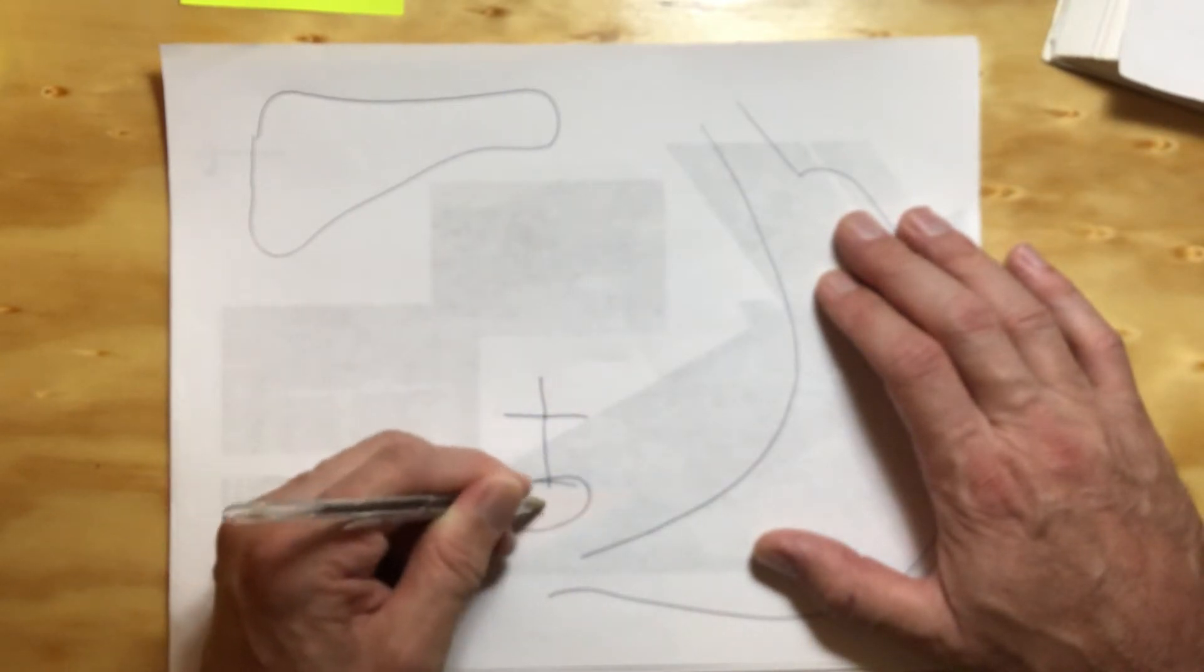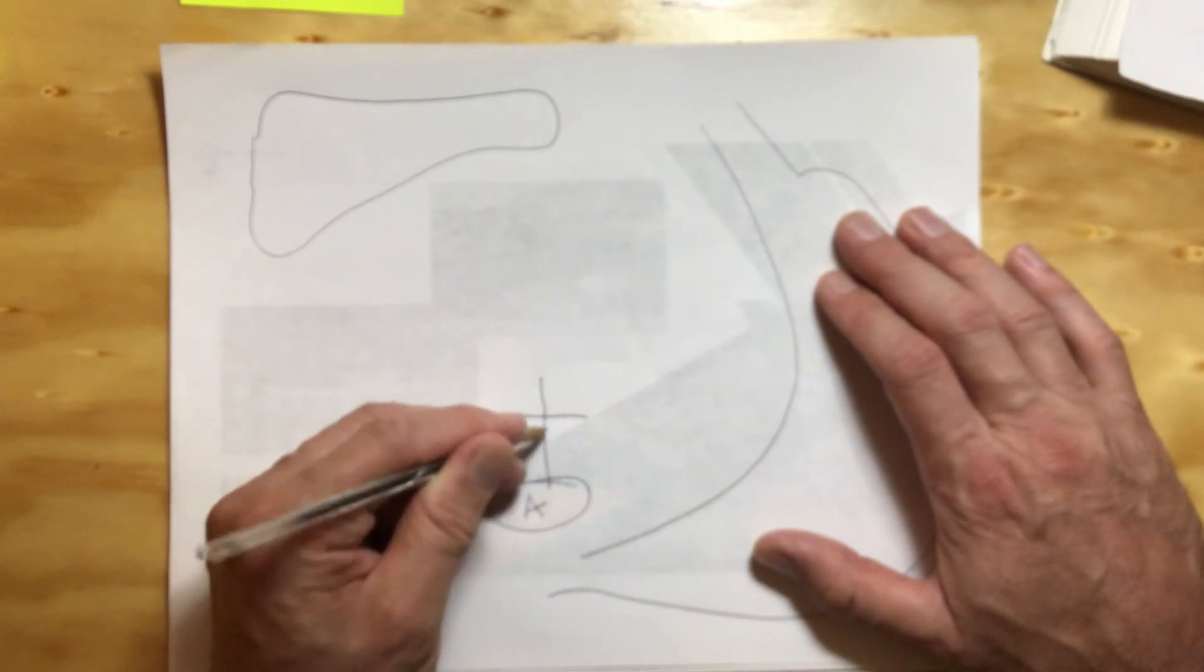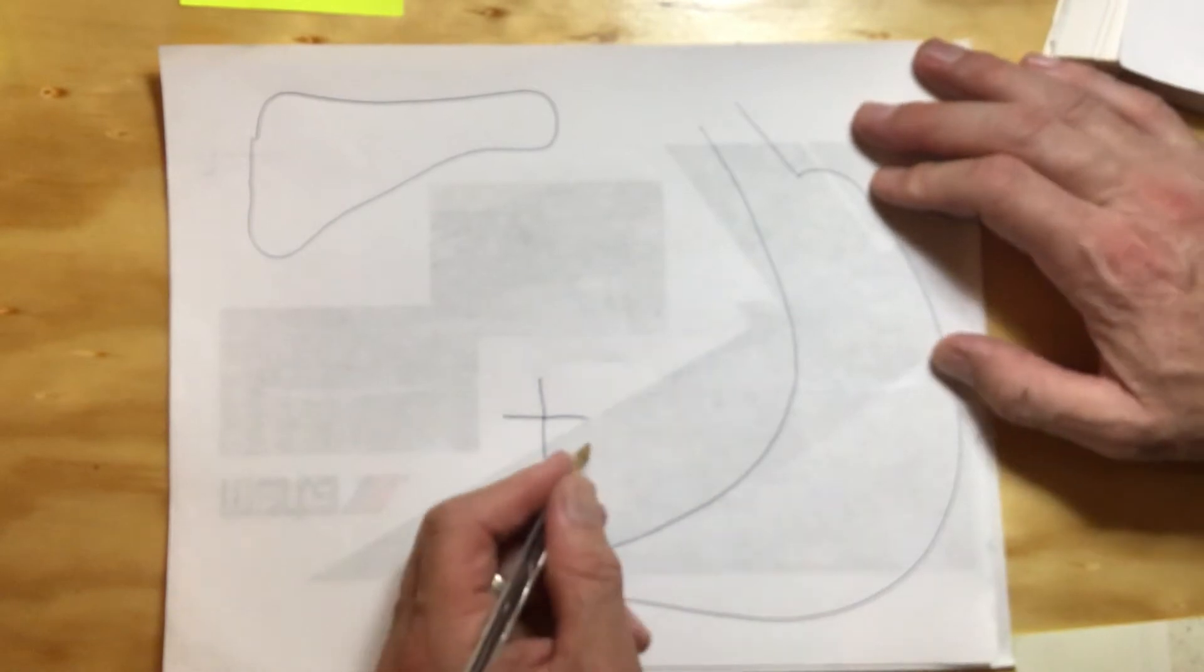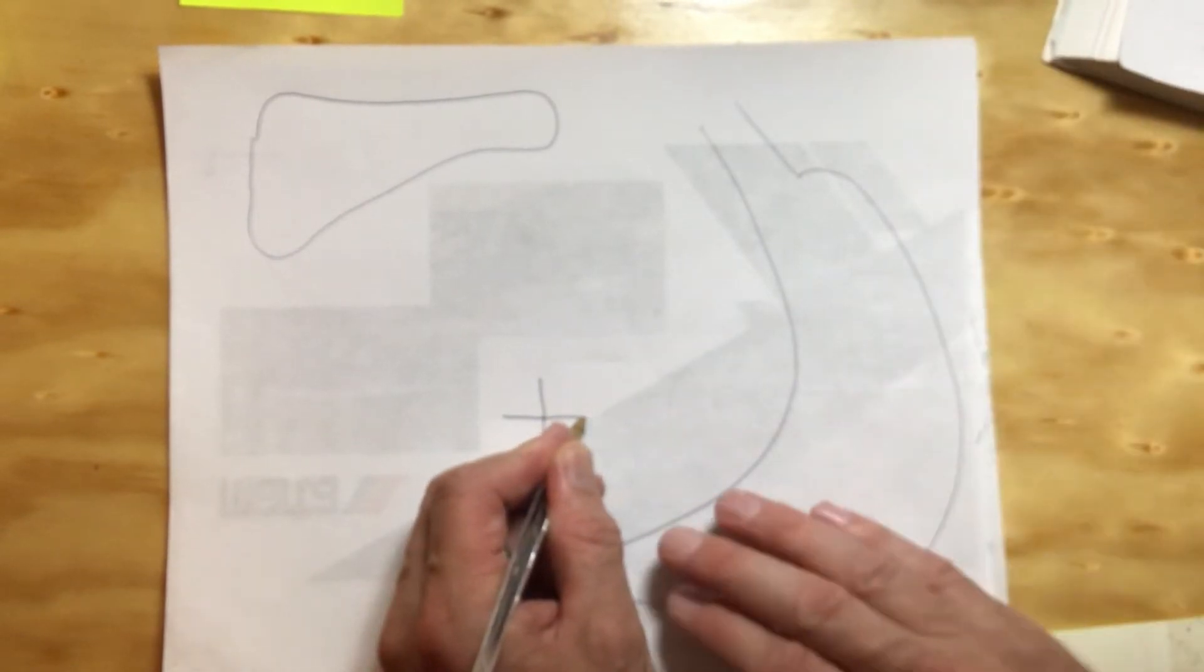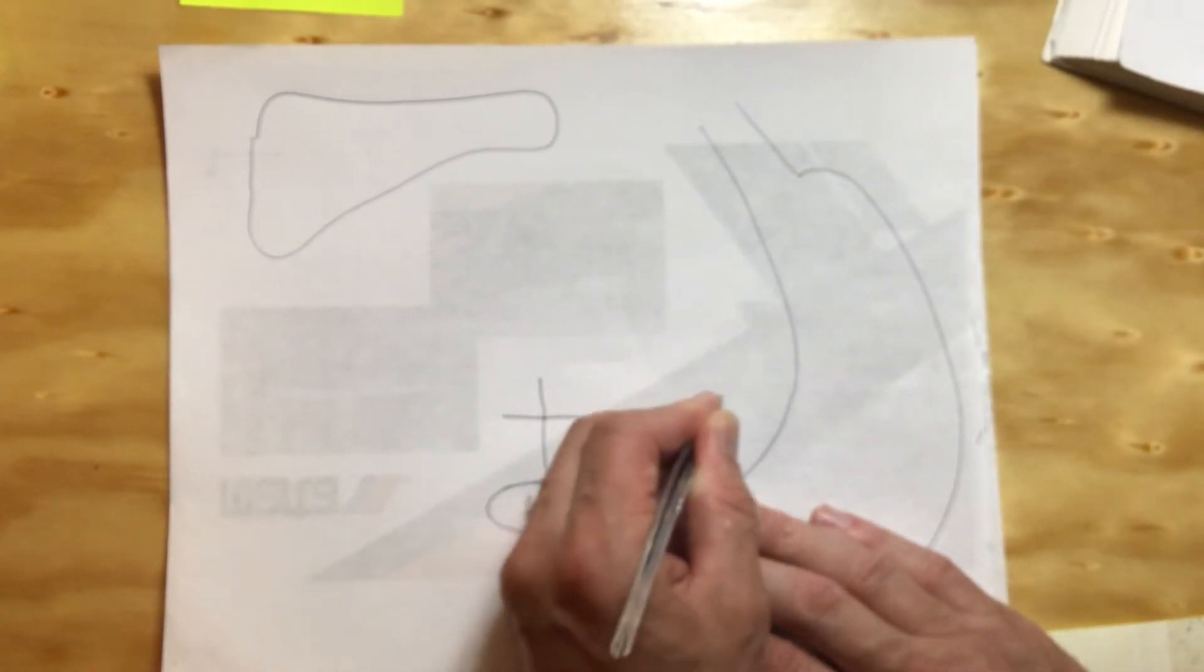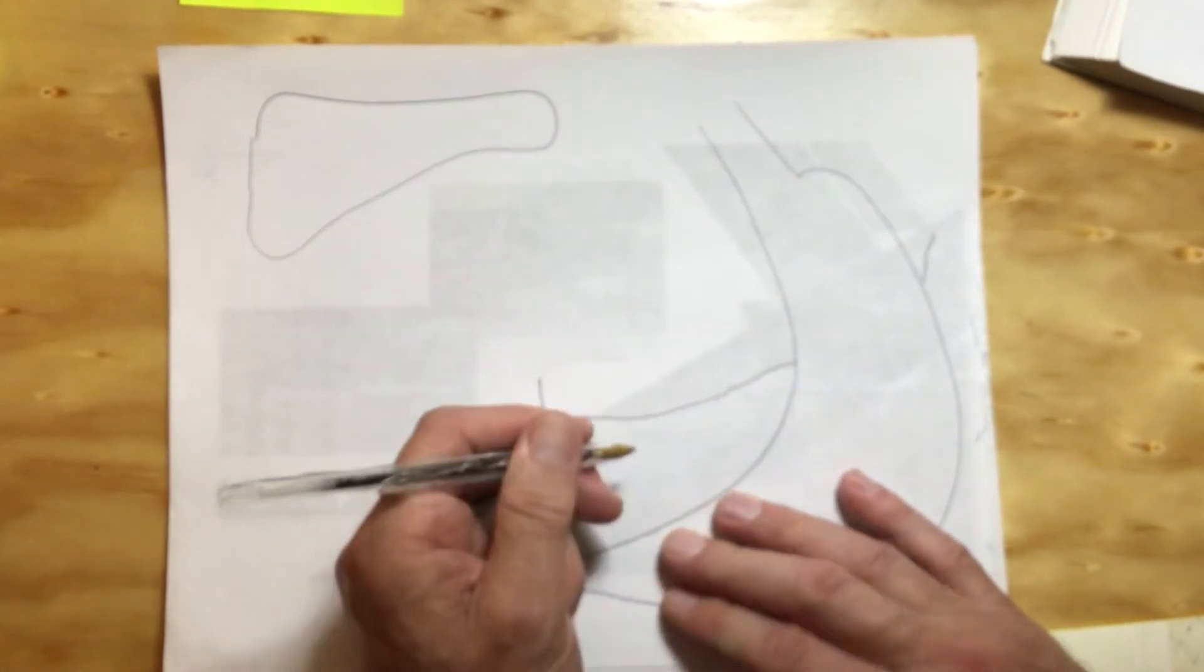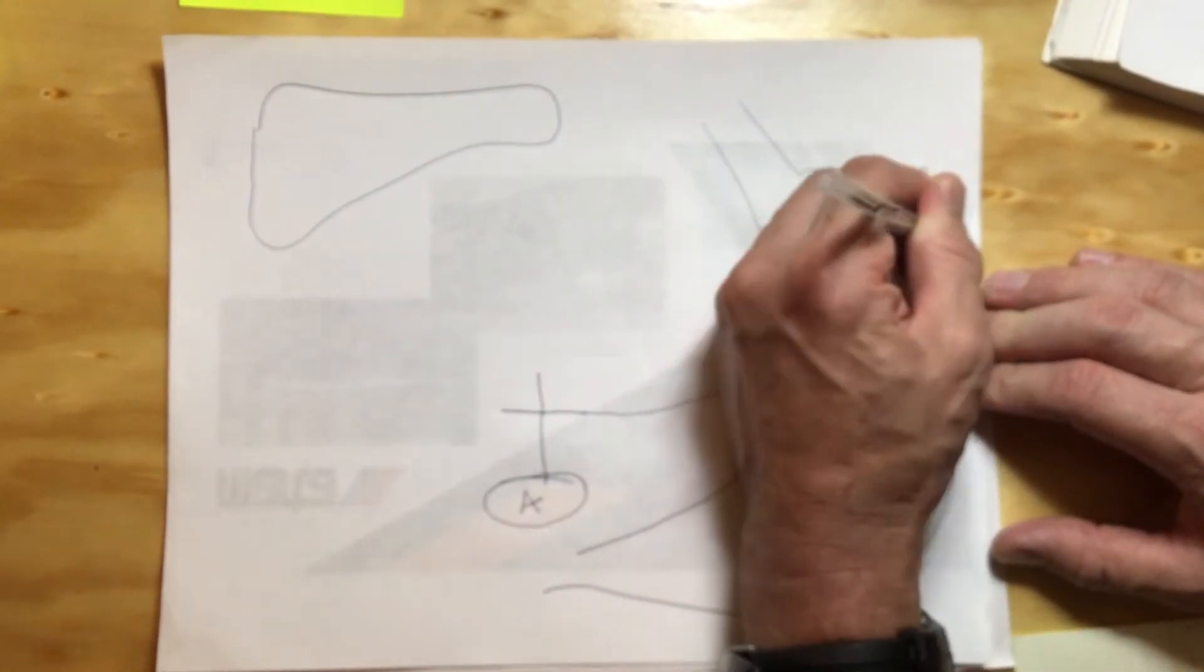So here's the aorta and here's this trunk coming off. It has three branches. The first branch, the easiest one we'll mention first, it goes to the spleen. I'll just draw a spleen here.